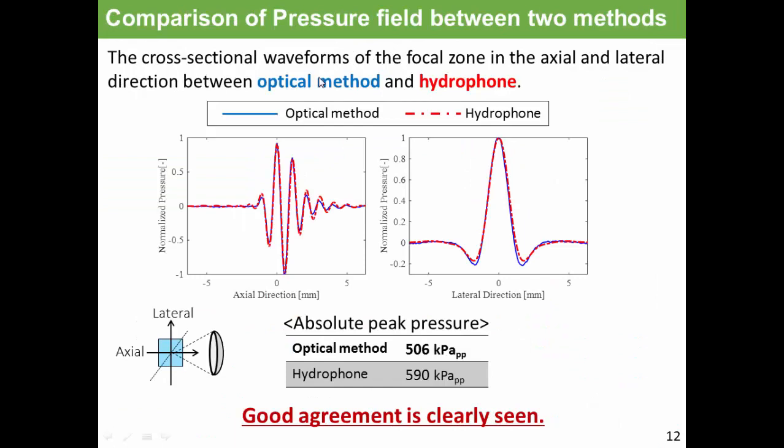We compared the cross-sectional waveforms of the pulsed ultrasound pressure field in the axial and lateral direction between optical method and hydrophone. This figure shows the waveforms in the axial direction and lateral direction. As you can see, good agreement is clearly seen for waveforms in both directions. For absolute peak pressure, the difference between two methods was about 15%. So, this result agreed well.